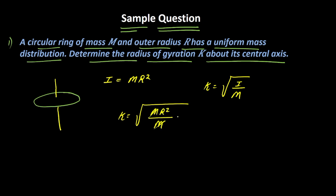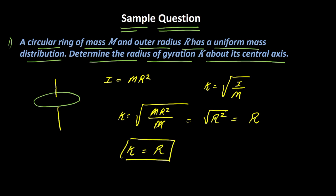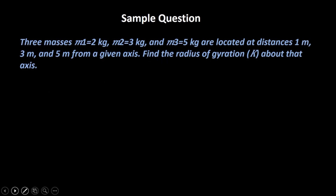Mass and mass cancel, so this becomes √(R²) = R. Therefore, the radius of gyration of a circular ring about its central axis is simply equal to the radius of the ring.